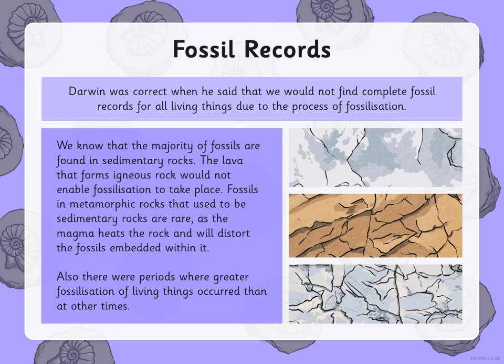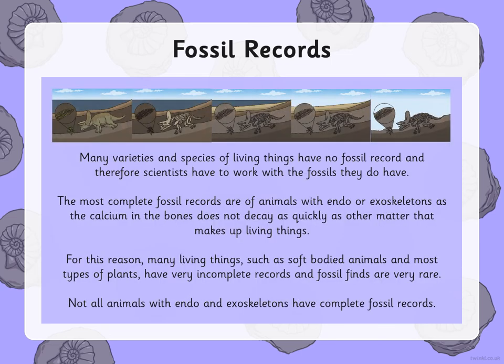We know that the majority of fossils are found in sedimentary rocks. The lava that forms igneous rock would not enable fossilisation to take place. Fossils in metamorphic rocks — which used to be sedimentary rocks — are rare, as the magma heats the rock and distorts the fossils embedded within it. Hopefully you remember the information about rocks from your year three learning. Also, there were periods where greater fossilisation occurred than at other times.